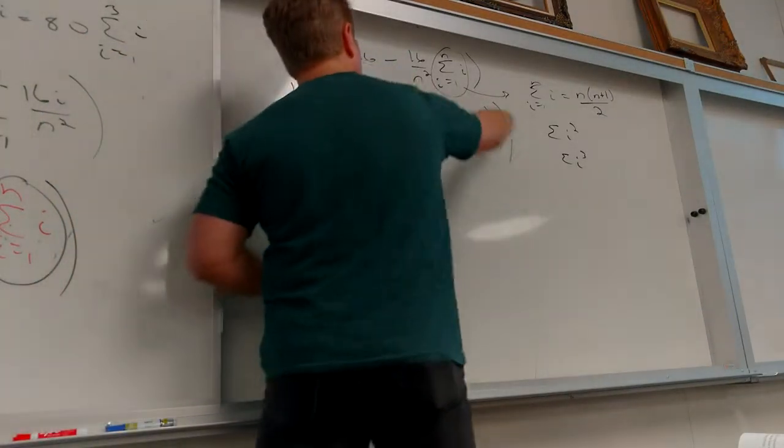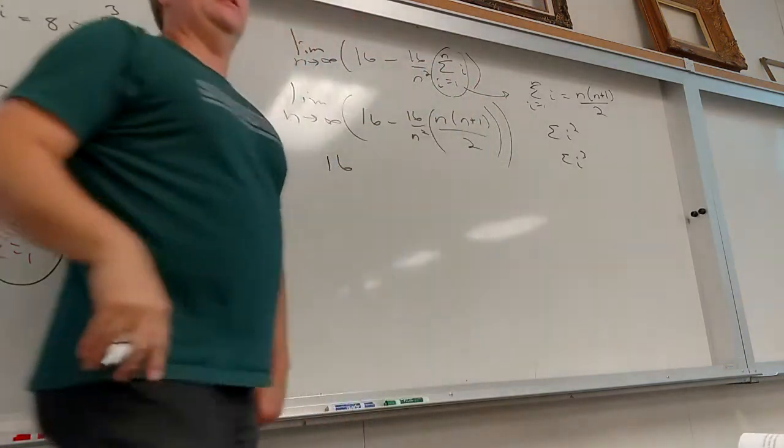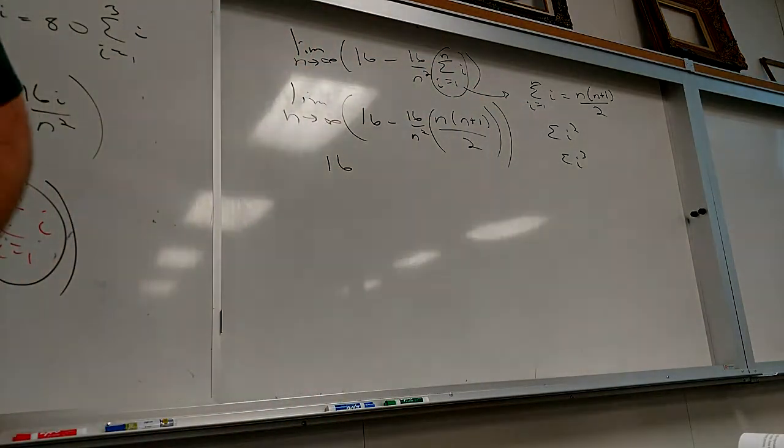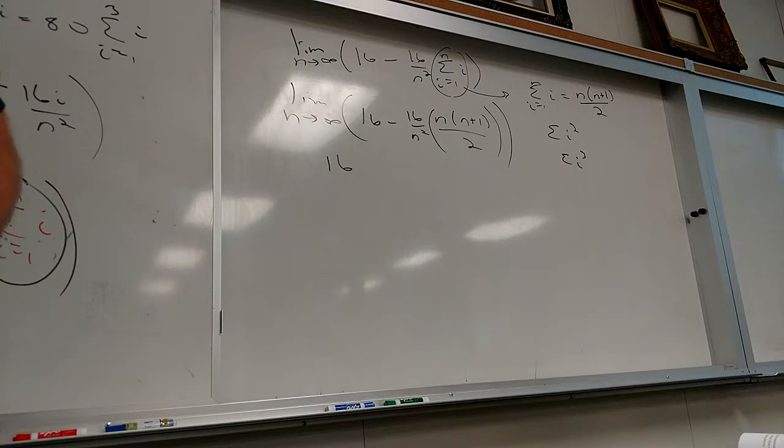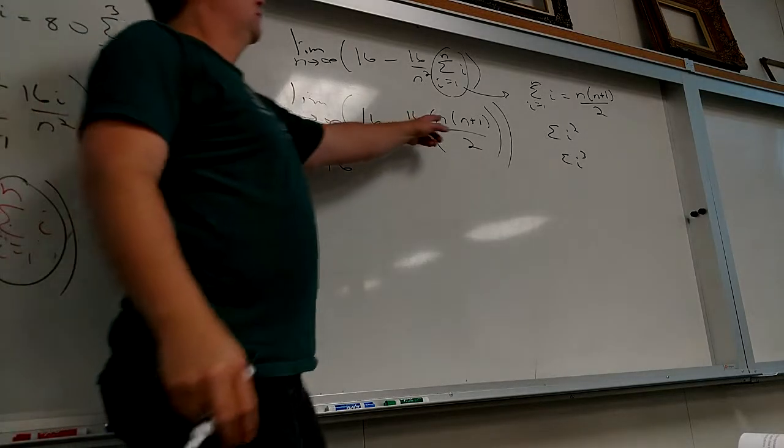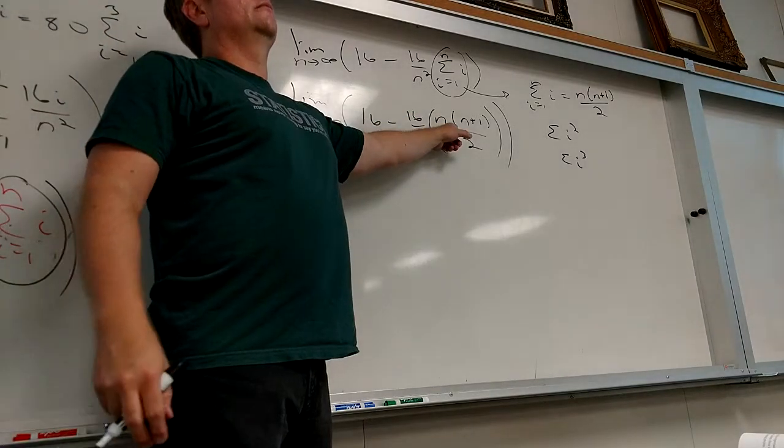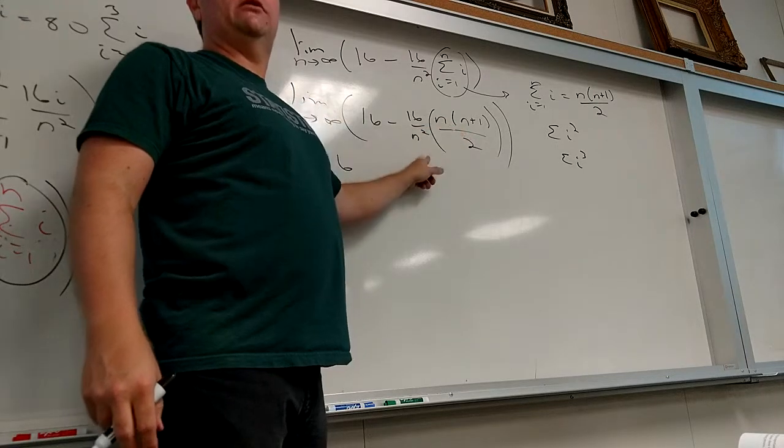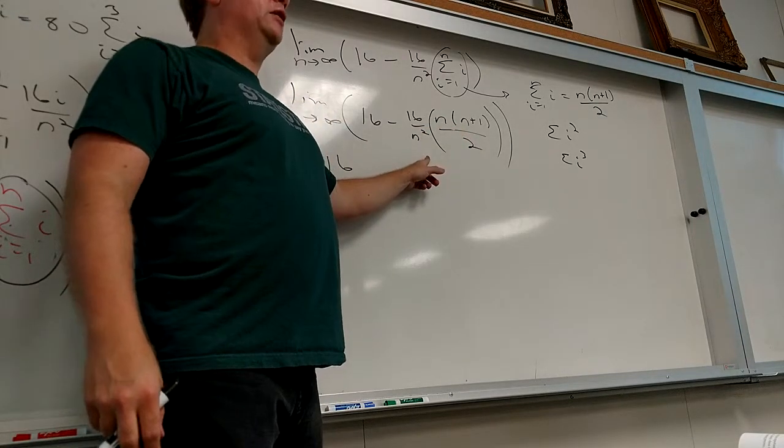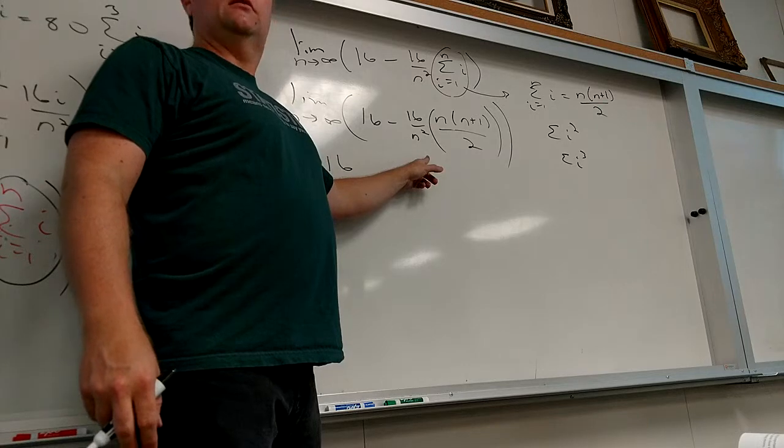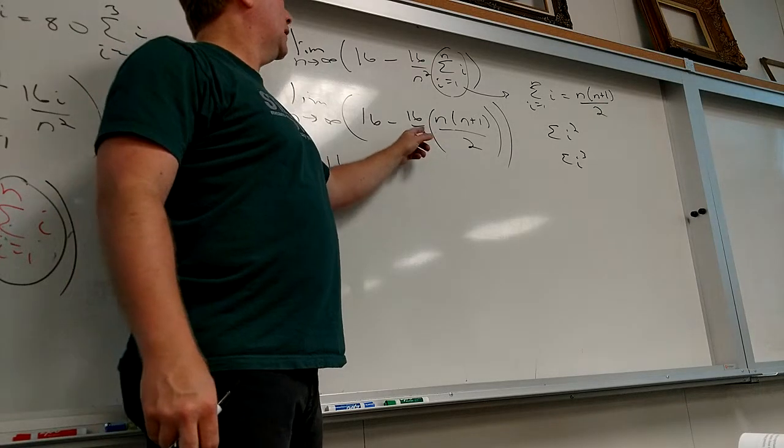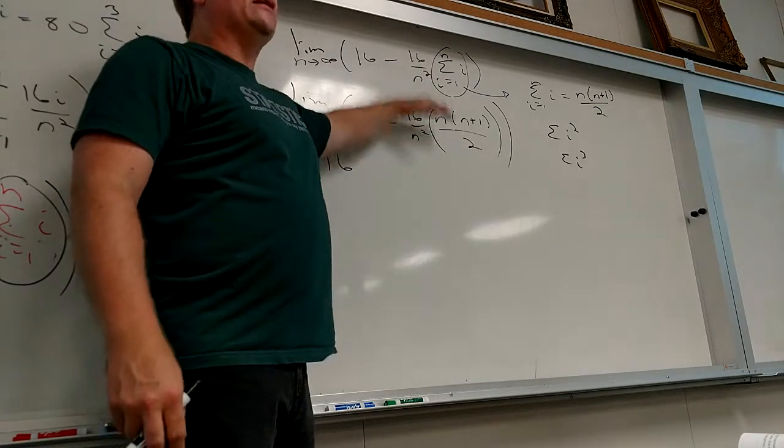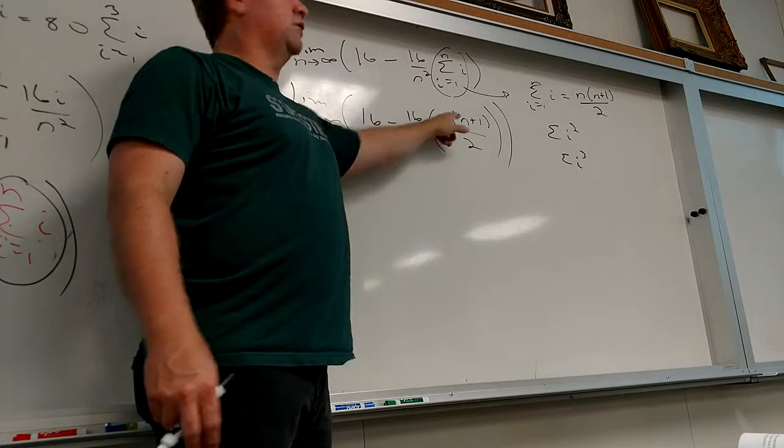What happens here? And the more you remember your pre-calc, the easier this step is going to be. What's the degree of the top? Second. What's the degree of the bottom? Second degree, right? So what is the limit as n goes to infinity if the degrees are the same?